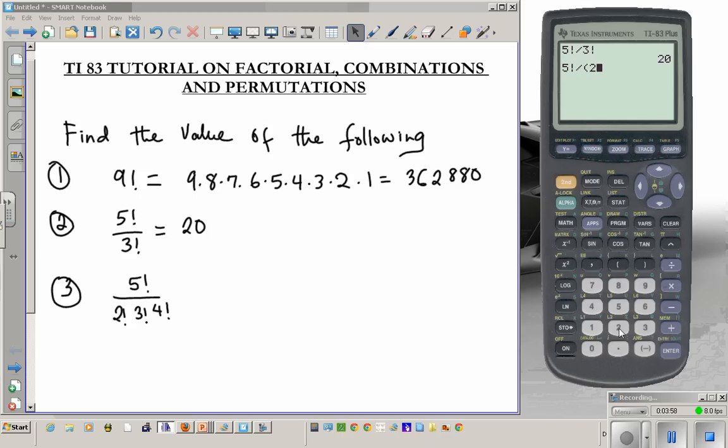Parenthesis 2, math, probability 4, gives me 2 factorial. 3 factorial: 3, math, probability 4, 3 factorial. And then 4, math, probability 4. Again, 4 factorial. Enter.